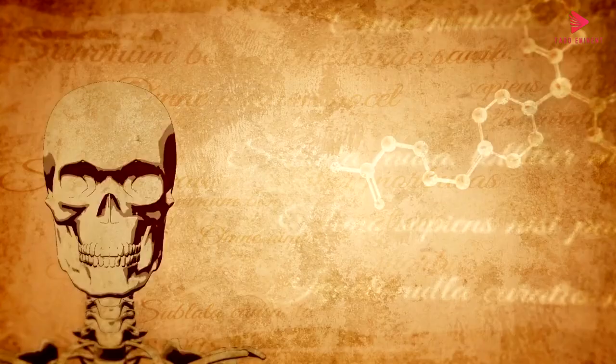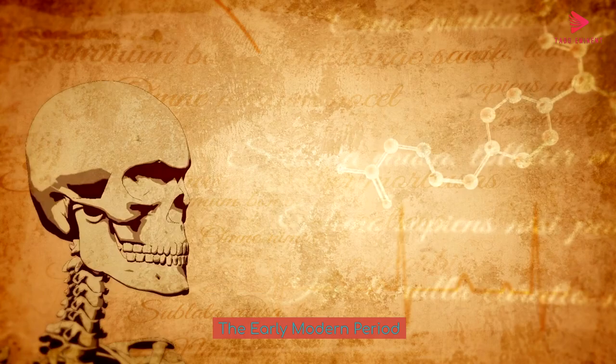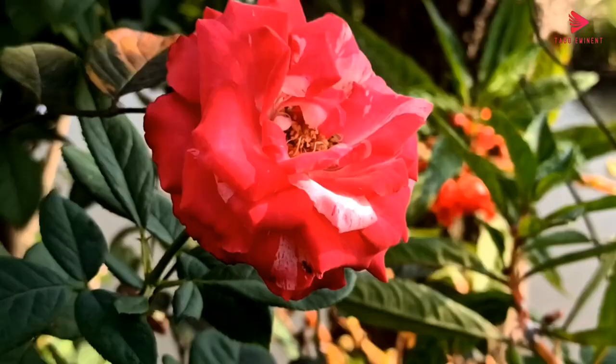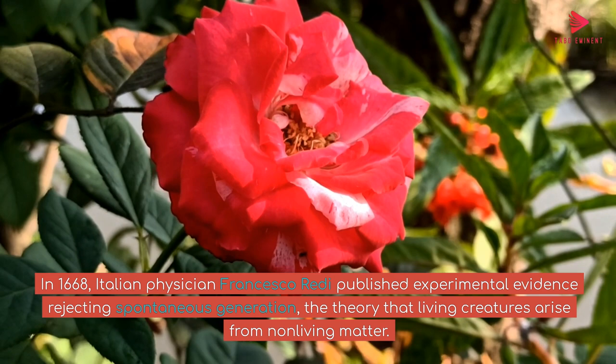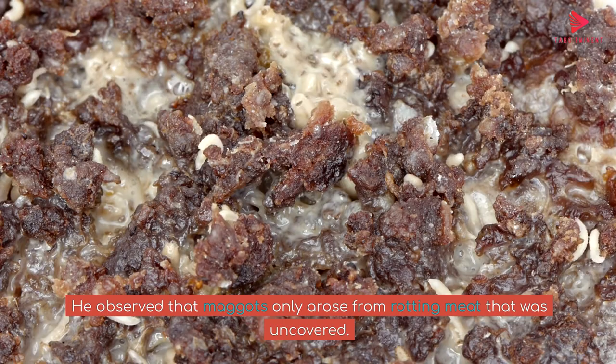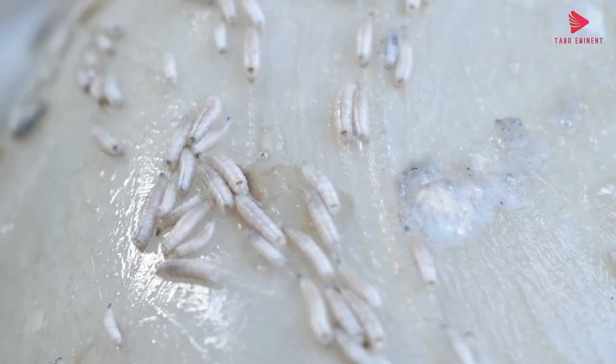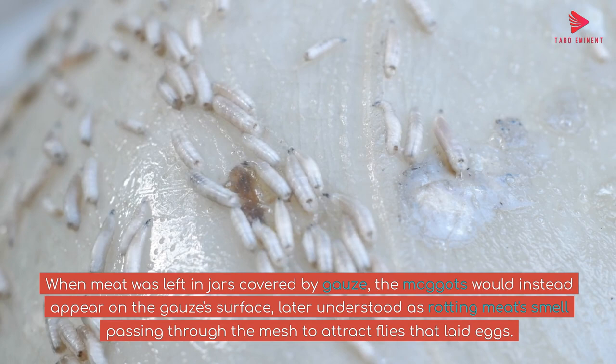The Early Modern Period: In 1668, Italian physician Francesco Redi published experimental evidence rejecting spontaneous generation — the theory that living creatures arise from non-living matter. He observed that maggots only arose from rotting meat that was uncovered. When meat was left in jars covered by gauze, the maggots would instead appear on the gauze's surface, later understood as rotting meat smell passing through the mesh to attract flies that laid eggs.